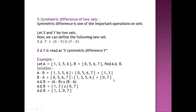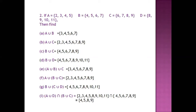B minus A is {0, 7}. Then we take the union of {1, 3} and {0, 7}. So 1, 3 union 0, 7 gives us the symmetric difference: {1, 3, 0, 7} is the answer.